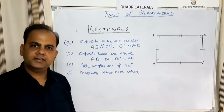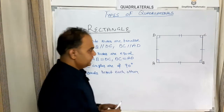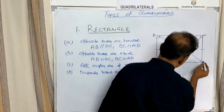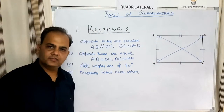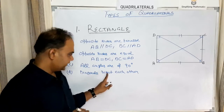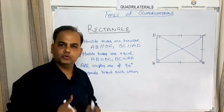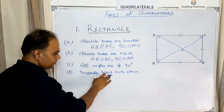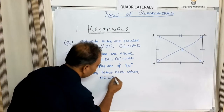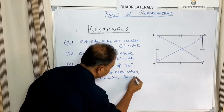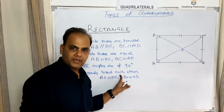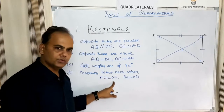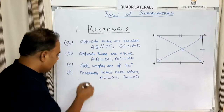The next property is that the diagonals of a rectangle bisect each other. The two diagonals are AC and BD. Bisect means the diagonals divide each other into two equal parts. If the diagonals intersect at point O, then AO equals OC and BO equals OD.